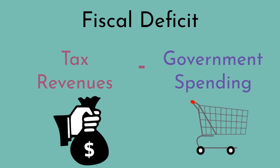Fiscal deficit is the shortfall in the government's income in comparison to its spending. Fiscal deficit occurs when the total government spending is higher than the total tax revenue it generates.